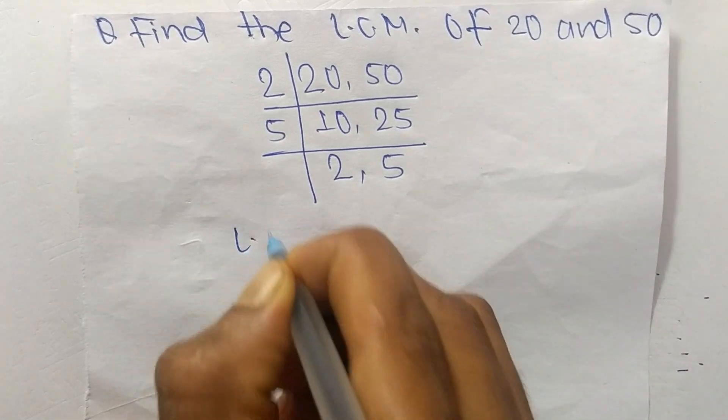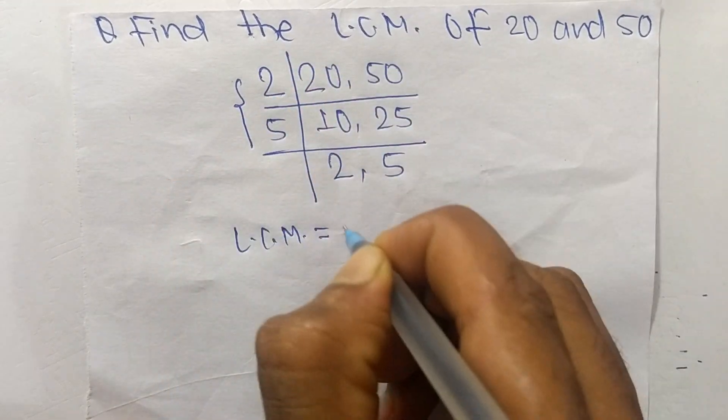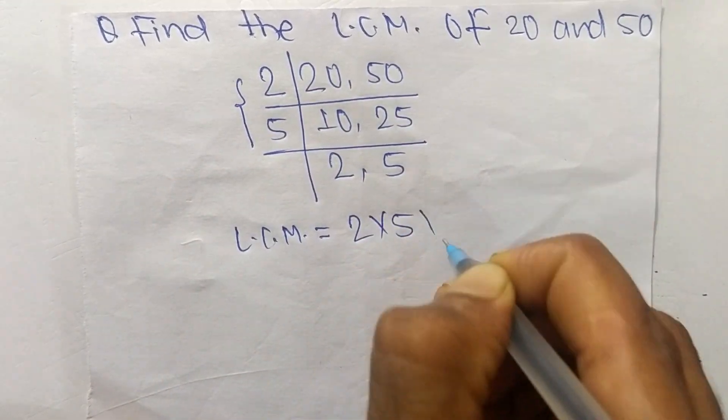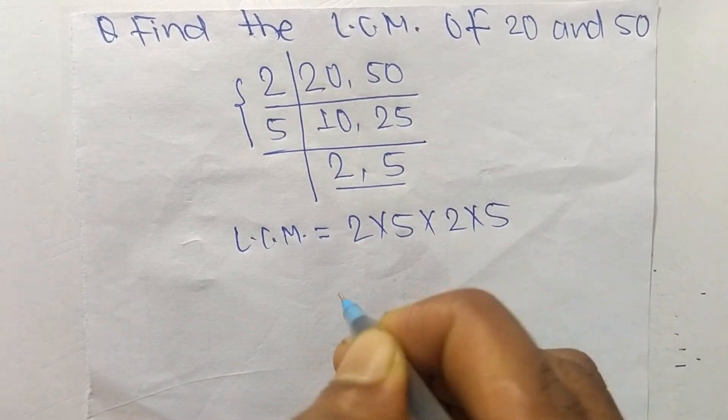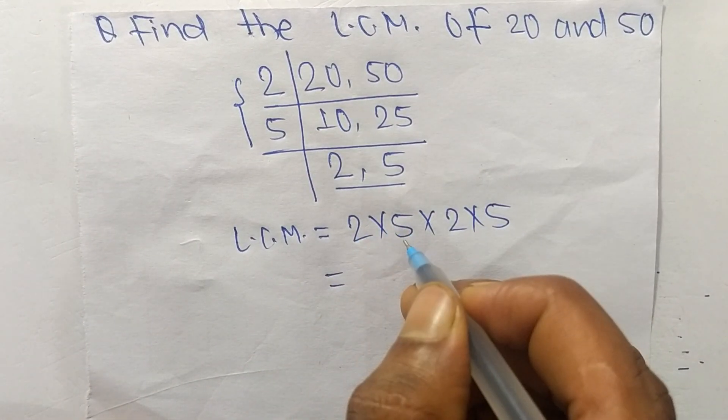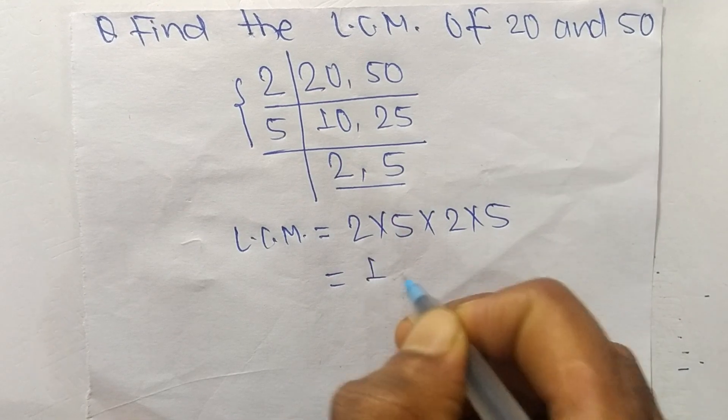So the LCM is equal to, from this part it is 2 times 5 and from this part it is 2 times 5. So it is equal to 2 times 5 means 10 times 2 means 20 times 5, it is 100.